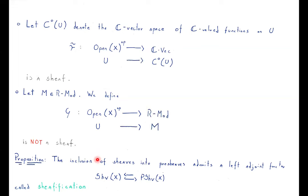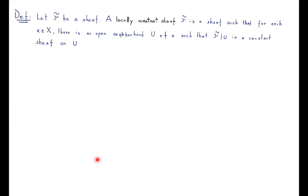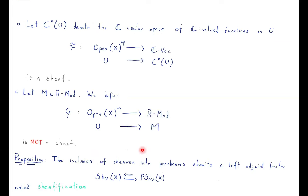Why is the constant presheaf not a sheaf? You can construct an example: if you pick a space with two elements, you can compute this constant presheaf and then its sheafification. Computing the global sections of both, they are not the same. If you sheafify the constant presheaf, you will see that the constant sheaf is not the same as that presheaf.